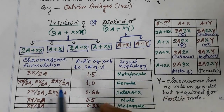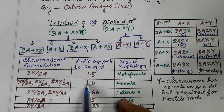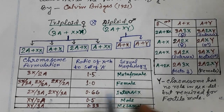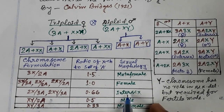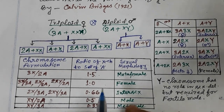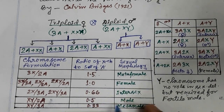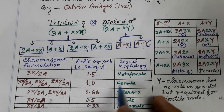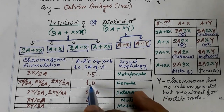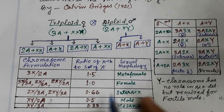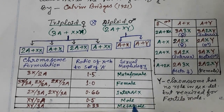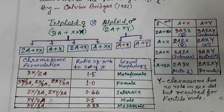An X:A ratio of 1 is female, 1.5 is meta female, and 0.5 is male. The range for intersex is between 0.5 and 1. Values above 1 give meta female, and values at or below 0.5 give male or super male. These flies are sexually sterile.